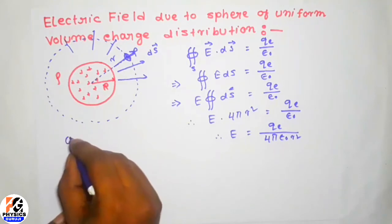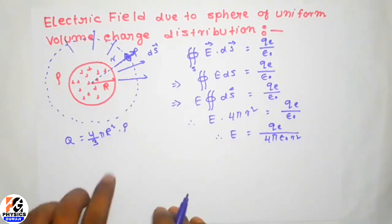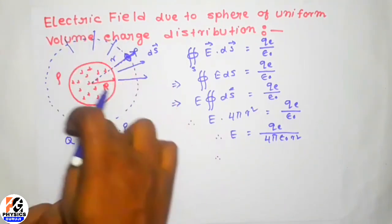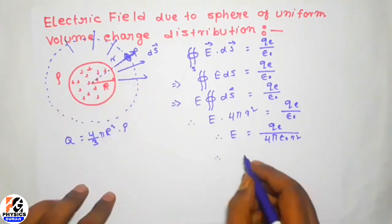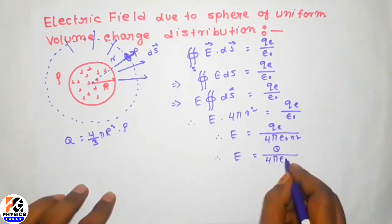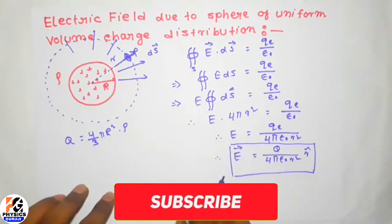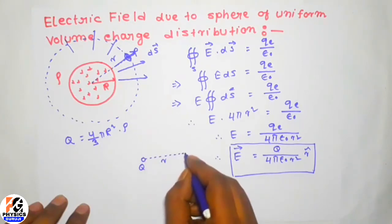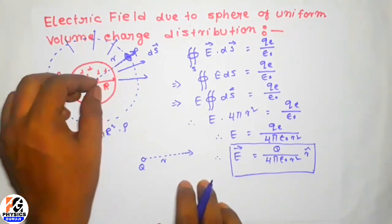Here Q_e is the charge enclosed in the Gaussian surface. Since the whole sphere is inside the Gaussian surface, if rho is the charge density and the volume is (4/3)π R³, that gives the total charge Q. So the electric field outside is E equals Q over 4π epsilon-zero r². You can see that this is the same as if the charge were placed at the center of the sphere — it is the electric field due to a point charge.